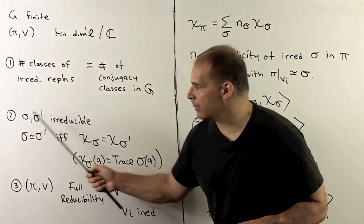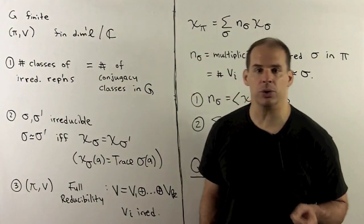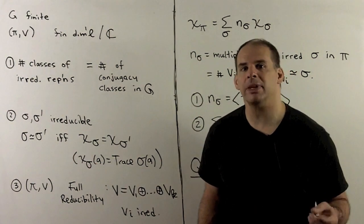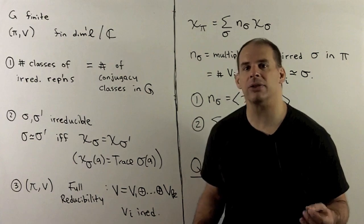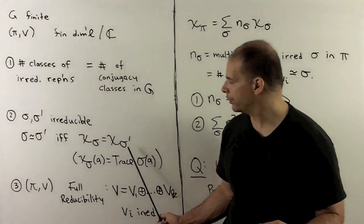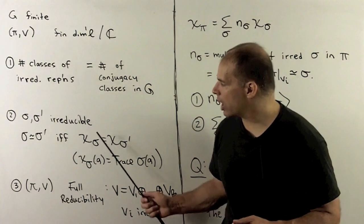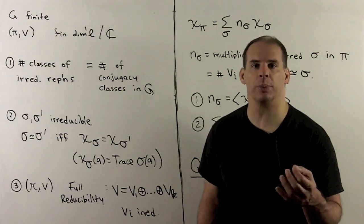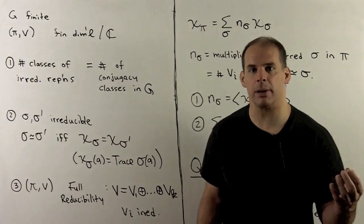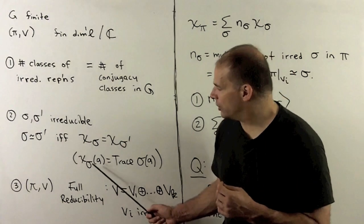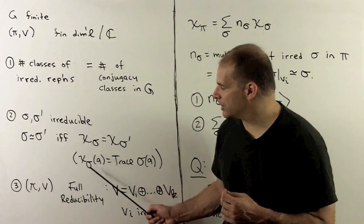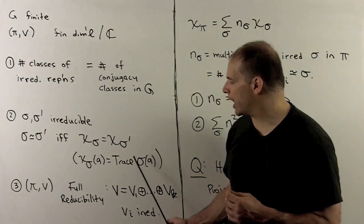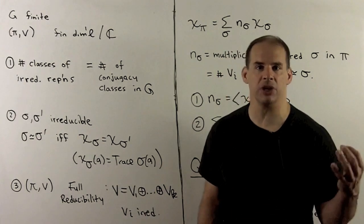We have sigma and sigma prime irreducible. Sigma is equivalent to sigma prime if and only if their characters are equal. We call it the character of sigma. This will be a function from the group to the complex numbers. We denote that by chi sub sigma, and if we evaluate at g, this is just defined as the trace of sigma(g).